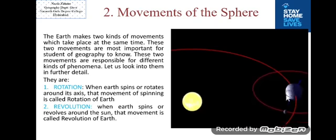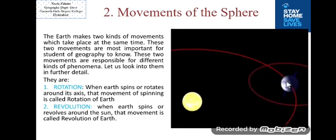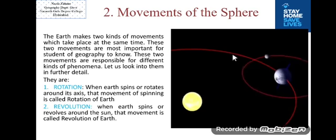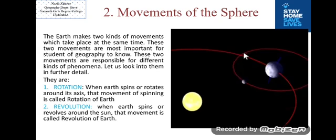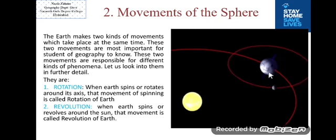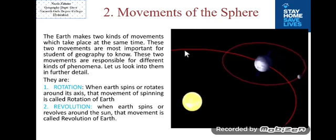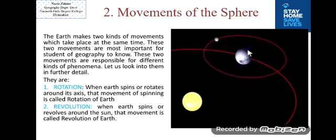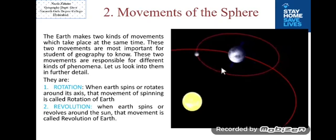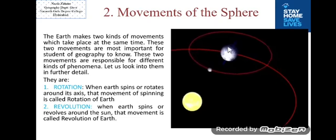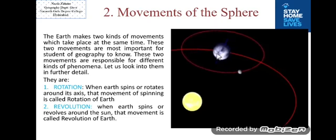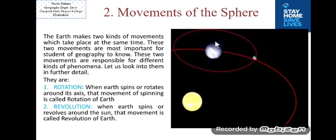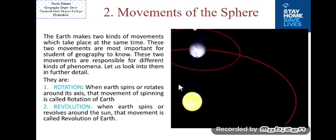The Earth completes its rotation and also completes its orbit around the sun. The axis is an imaginary line which runs from the North Pole to the South Pole.